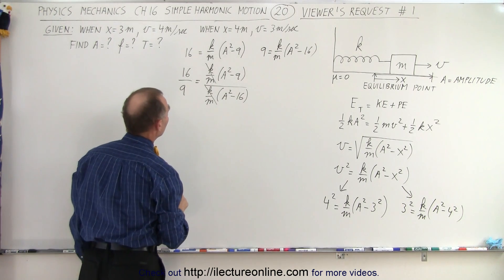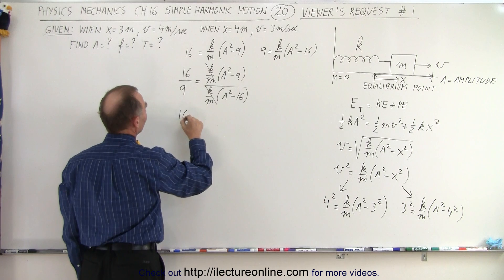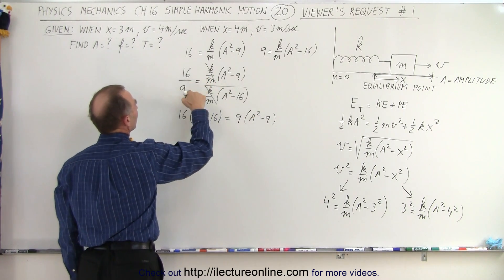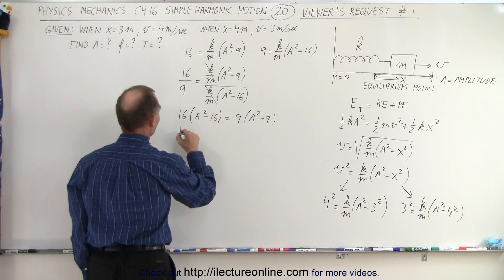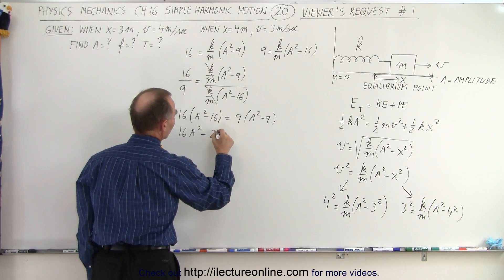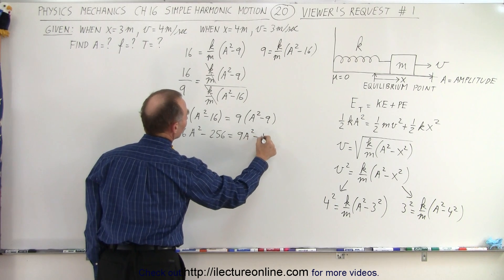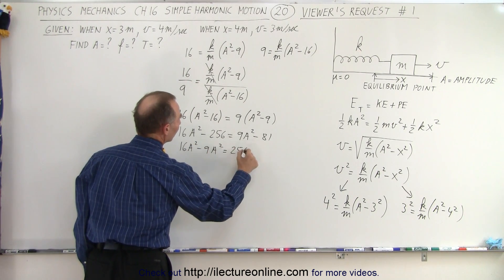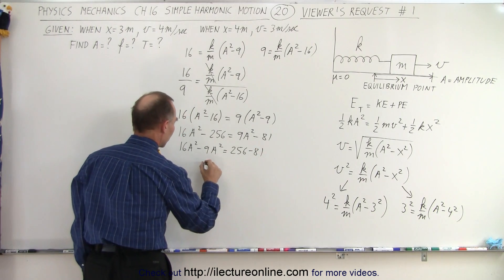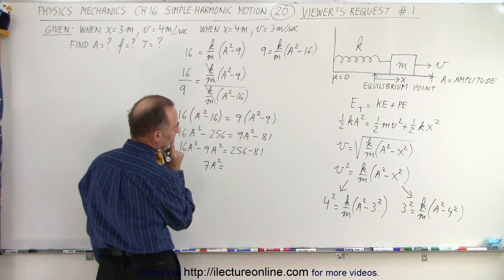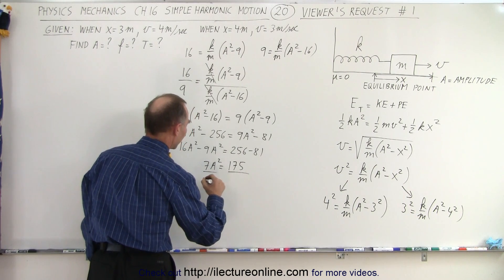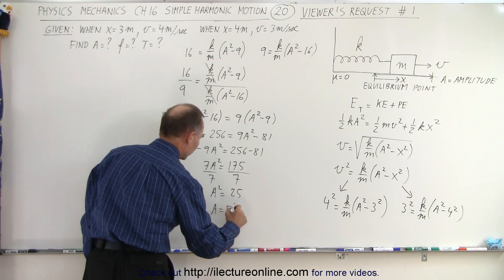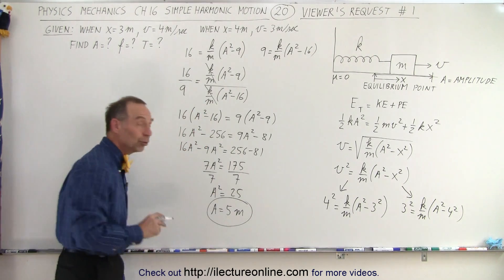So what we're going to do is cross multiply. We end up with 16 times a squared minus 16 equals 9 times a squared minus 9. I multiply everything out: 16 a squared minus 256 equals 9 a squared minus 81. Moving like terms, 16 minus 9 that would be 7 a squared equals 256 minus 81 that would be 175. And then divide both sides by 7, I get a squared equals 25 or a equals 5. And of course in this case that would be 5 meters. So the total amplitude of the system is 5 meters.